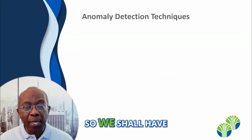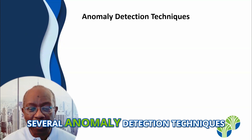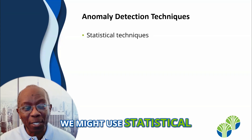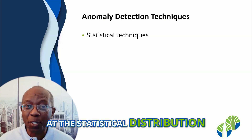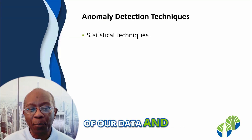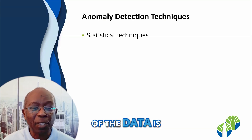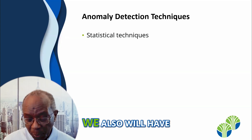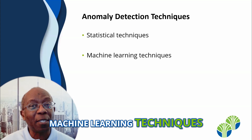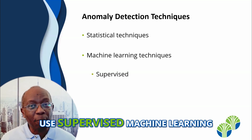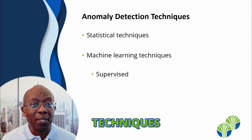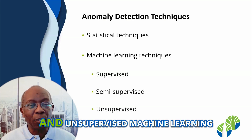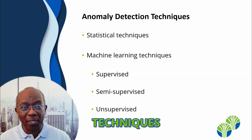We shall have several anomaly detection techniques that we can use. We might use statistical techniques where we look at the statistical distribution of our data and notice that some of the data is not in the range that one would normally expect. We also will have machine learning techniques — supervised machine learning techniques, semi-supervised machine learning techniques, and unsupervised machine learning techniques.